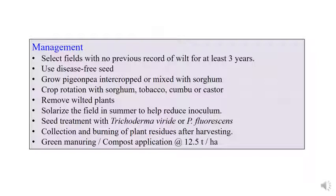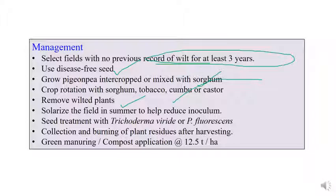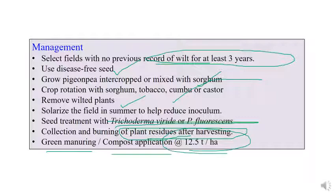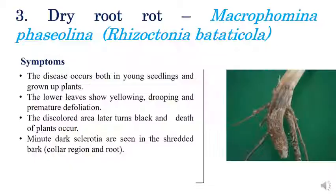For management of Fusarium wilt: select fields with no previous record of wilt from the past three years; use disease-free seeds; grow pigeon pea intercropped with sorghum; practice crop rotation with sorghum, tobacco, jowar, and castor; remove wilted plants; practice soil solarization; seed treatment with Trichoderma viride and Pseudomonas fluorescens; collect and burn plant residues; and apply green manure or compost at 12.5 tonnes per hectare.